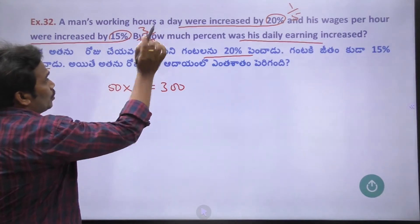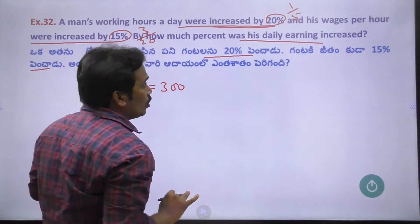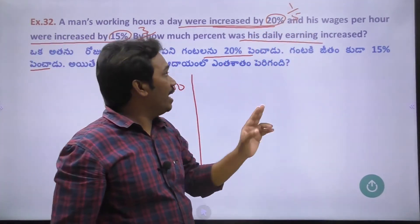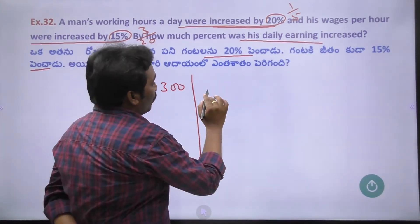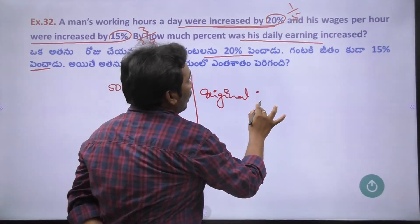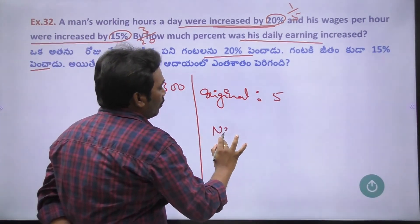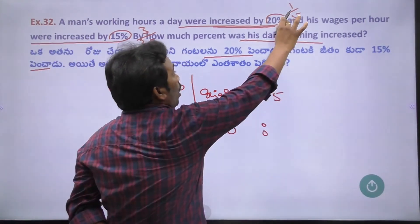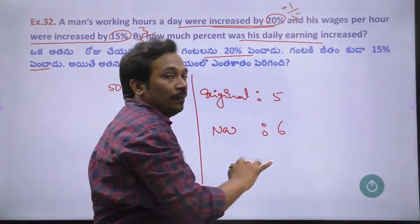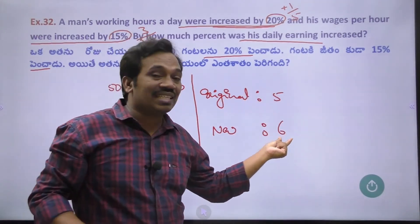The man's working hours were increased by 20%, which is 1 by 5. So if originally you work 5 hours a day, with a 20% increase you now work 6 hours a day — that's the original 5 plus 1.